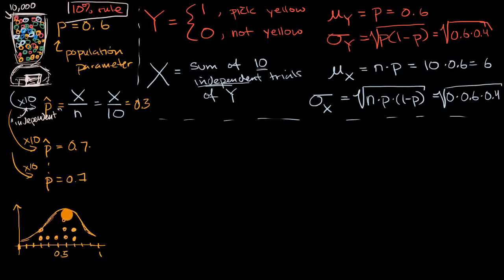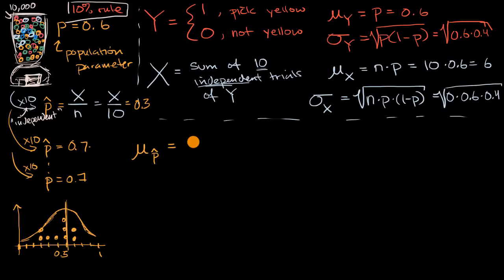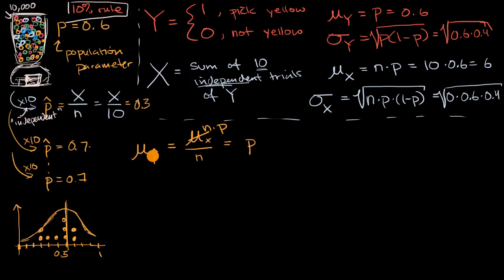How can we characterize the true sampling distribution for the sample proportion? What will the mean and standard deviation be? The mean of our sampling distribution of our sample proportion is just going to equal the mean of X divided by n. The mean of X is n times p; divided by n, you get p. The expected value of your sample proportion equals the true proportion p, which confirms this is a reasonably unbiased estimator.